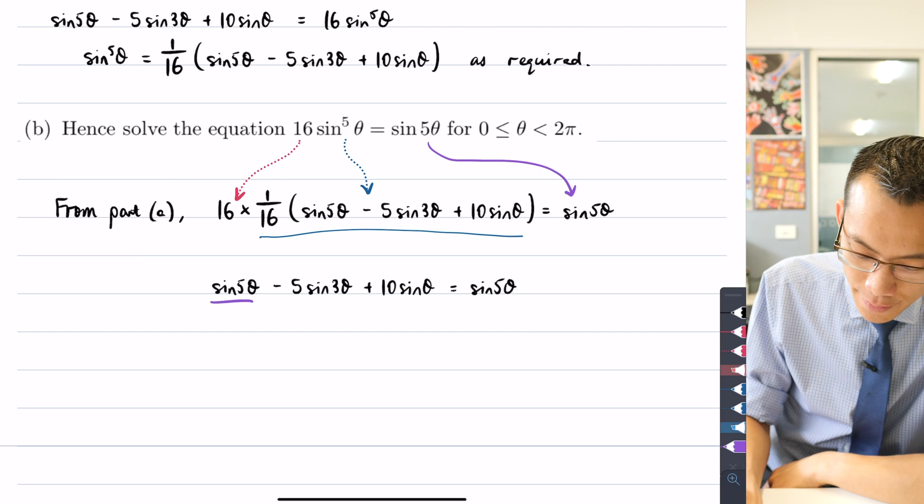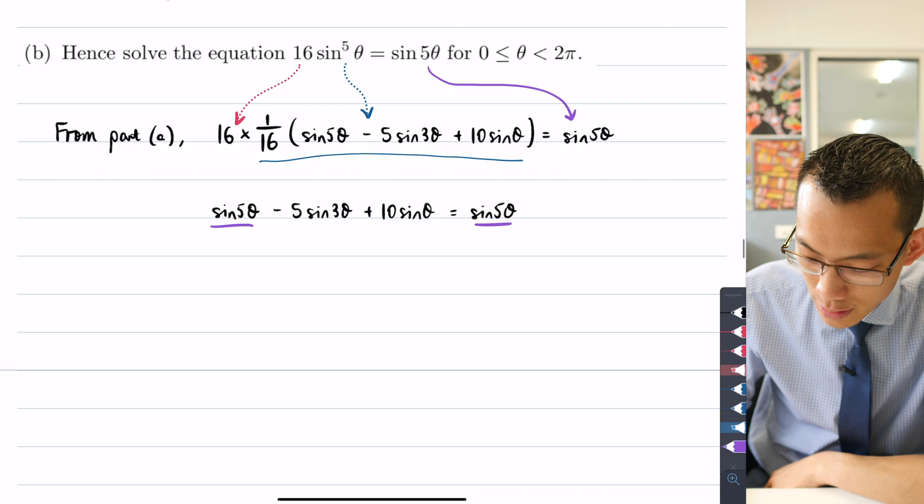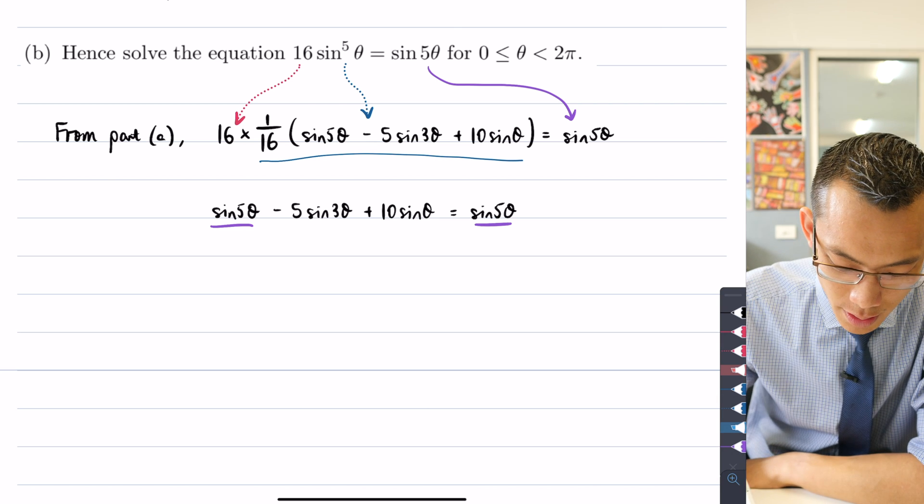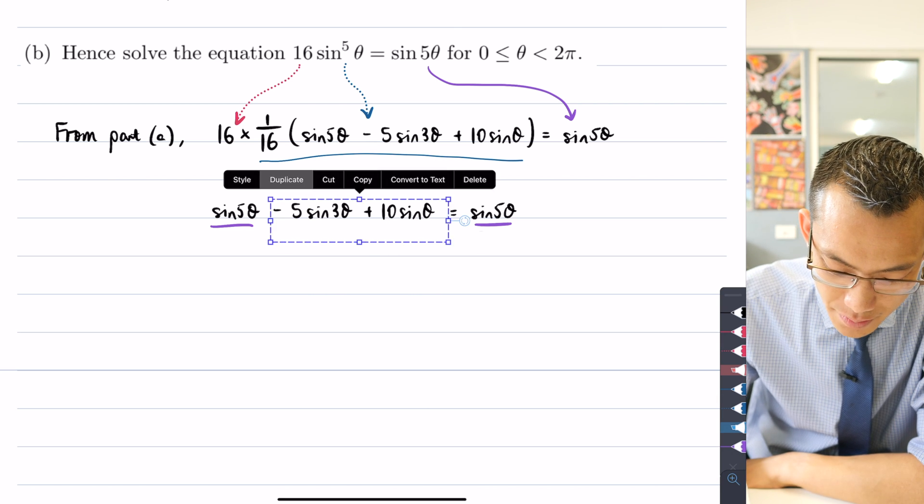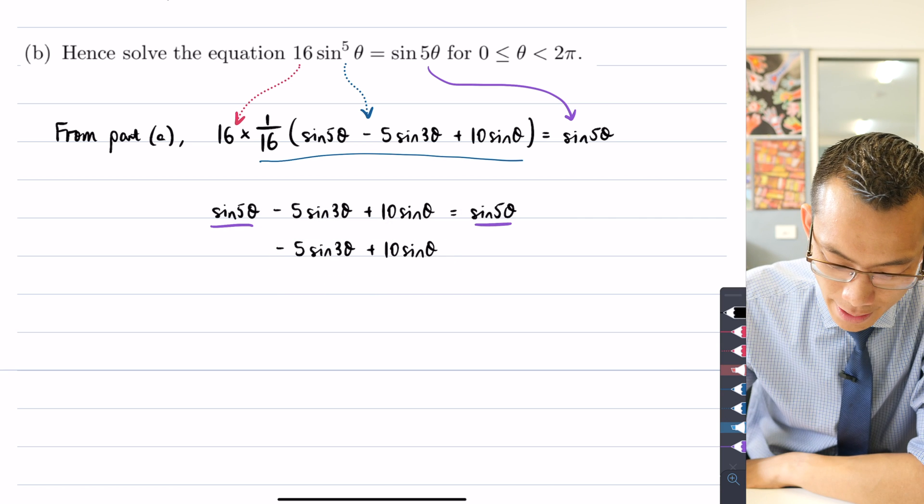So that leaves me with just this. That's going to be equal to, on the right-hand side, sin 5θ. And second, you can see I've got a sin 5θ on the left, a sin 5θ on the right. So those are going to cancel.